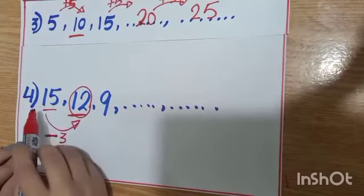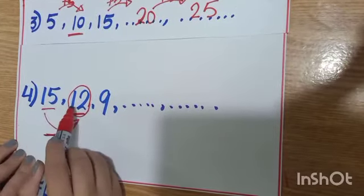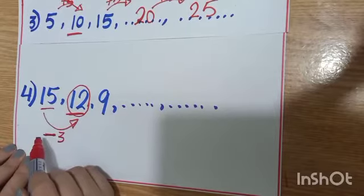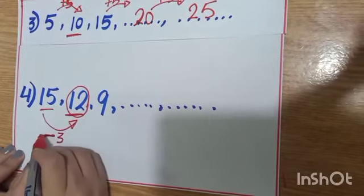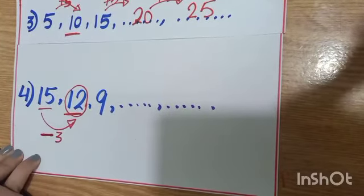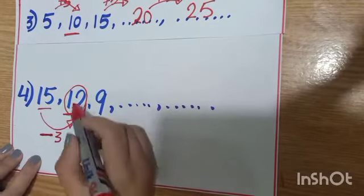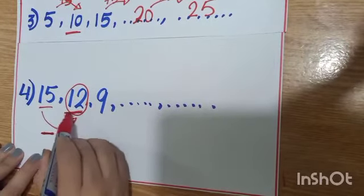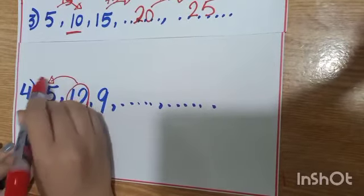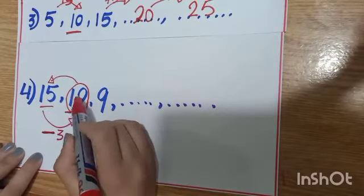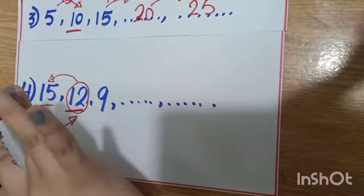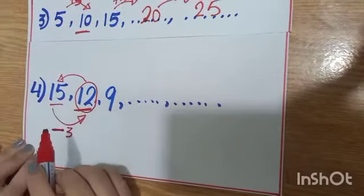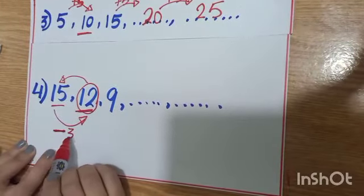The last one, fifteen became twelve. It increase or decrease? It decreases. So I will write minus. Decrease by what? I will count from the smallest one to the greatest. After twelve: thirteen, fourteen, fifteen. So every time, I will subtract three.